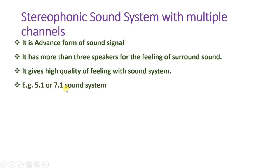Examples include 5.1 and 7.1 systems. In this notation, the first digit indicates the number of speakers used in the system, and the second digit after the dot indicates the number of woofers (subwoofers). So in a 5.1 system there are 5 speakers with 1 woofer, and in a 7.1 system there are 7 speakers with 1 woofer.